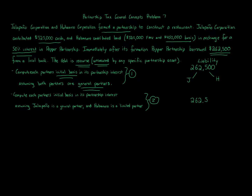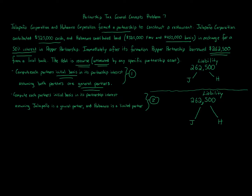In the partnership world — which is different from S corporations — you get to include in your basis the portion of liabilities you're responsible for. You don't get to do that for S corporations or C corporations, because a corporation is a separate legal entity. So the question is how we break up the $262,500 between Jalapeno and Habanero.